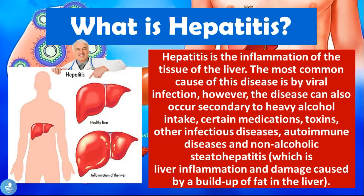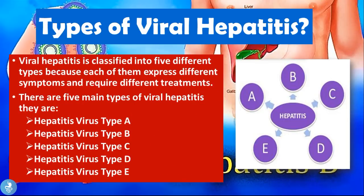Now let's take a closer look at the types of viruses that cause viral Hepatitis. There are five main types of viral Hepatitis, classified into five different types because each expresses different symptoms and requires different forms of treatment. They are Hepatitis virus type A, type B, type C, type D, and type E. In today's video we're going to focus on Hepatitis virus type B.